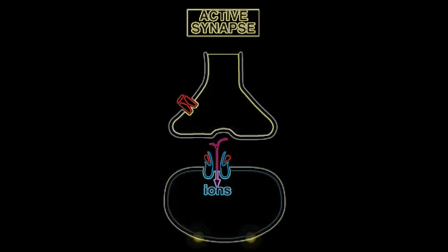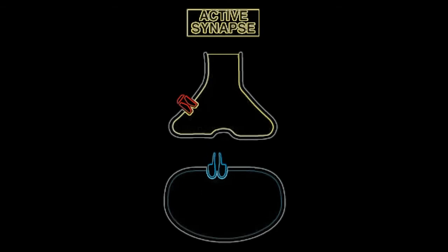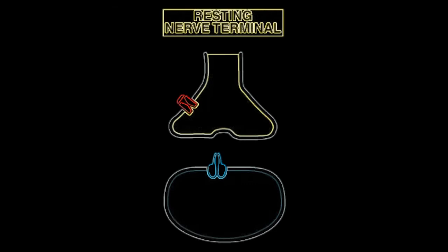The neurotransmitter is quickly removed from the synaptic cleft, either by enzymes that destroy it, or by reuptake into the nerve terminals or neighboring cells.